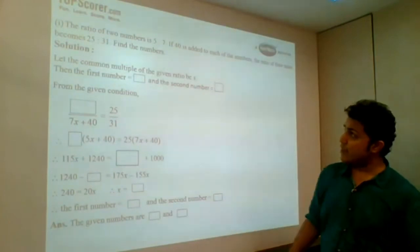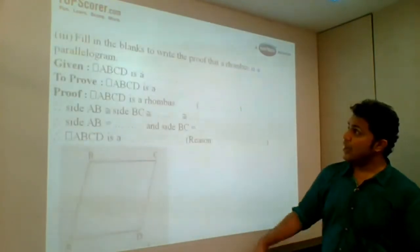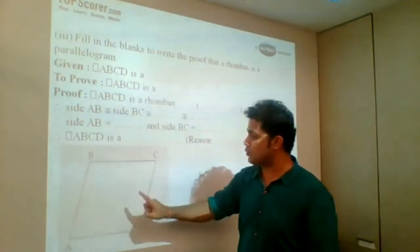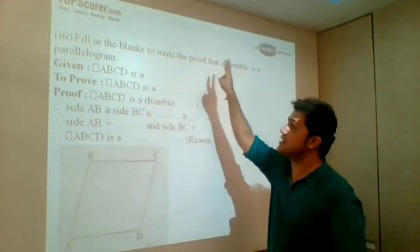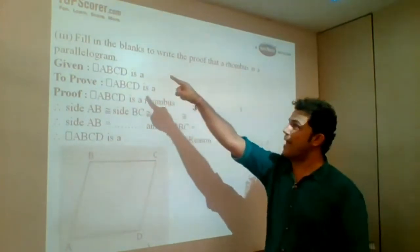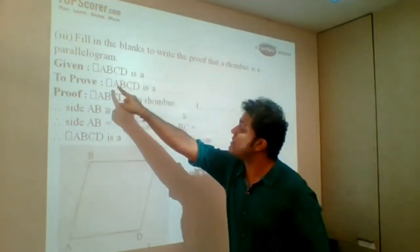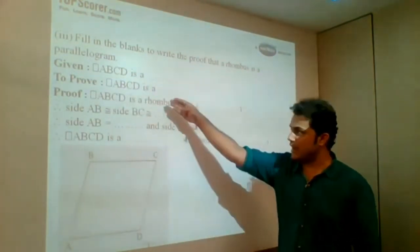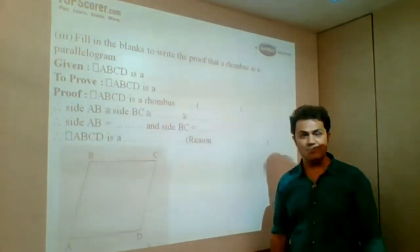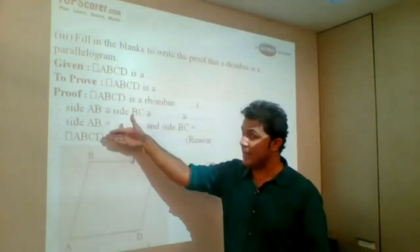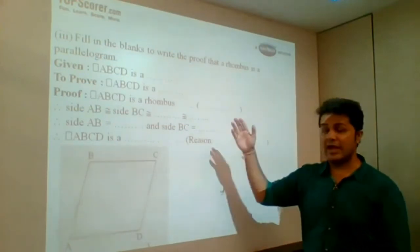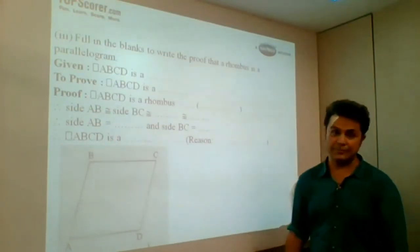Now let's see one sum of geometry here, which is again proof based. Fill in the blanks to write the proof that a rhombus is a parallelogram. You can see quadrilateral ABCD is - you need to understand from the statement that rhombus is a parallelogram, so quadrilateral ABCD is a rhombus, and you need to prove that quadrilateral ABCD is a parallelogram. So then you write the proof accordingly, filling the correct reasons as well as the statements. You can see a lot of things which initially you had to write, now is given by the board, and you need to just select certain things at proper places. If you are able to do that, you can get very good scores in algebra as well as geometry.